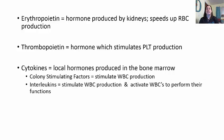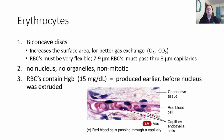Now let's look at the formed elements, starting with red blood cells or erythrocytes. Erythrocytes have a special biconcave shape—almost like a donut with the middle not completely pushed out, curving inward on both the top and bottom. This shape increases the surface area of the cell, allowing for better gas exchange: picking up oxygen and dropping off carbon dioxide more easily and quickly.